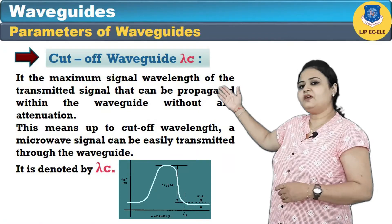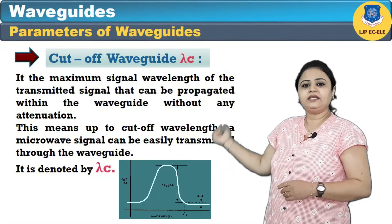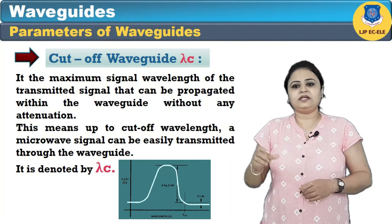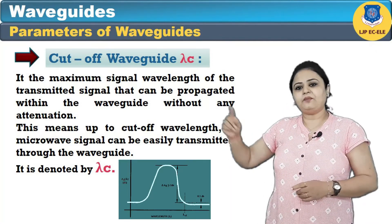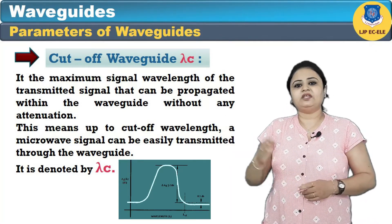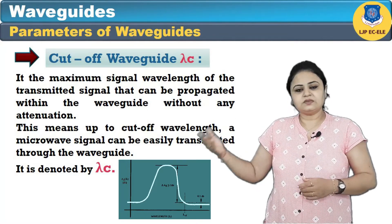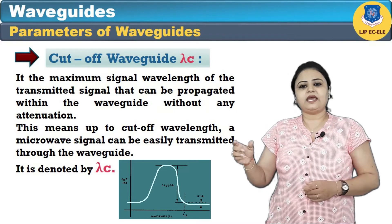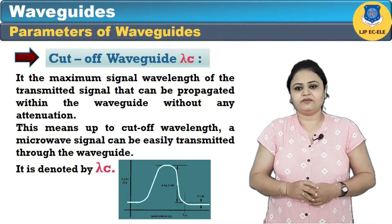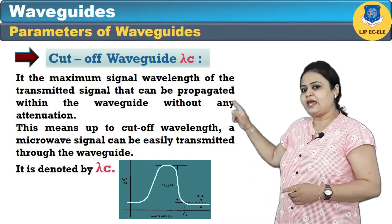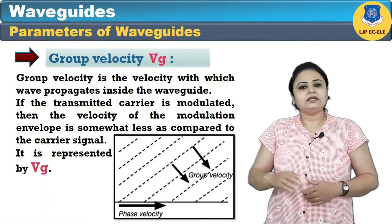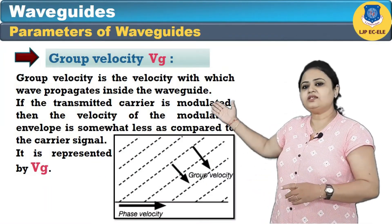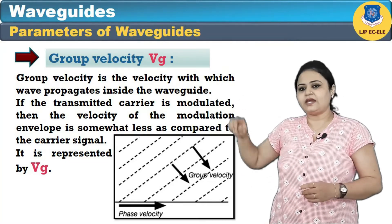First of all, let us see the parameters of waveguide to be considered. The first is cutoff wavelength — it is the maximum wavelength of the transmitted signal that can be propagated within the waveguide without any attenuation. This means up to the cutoff wavelength, the microwave signal can be easily transmitted through the waveguide, and it is denoted by lambda c.